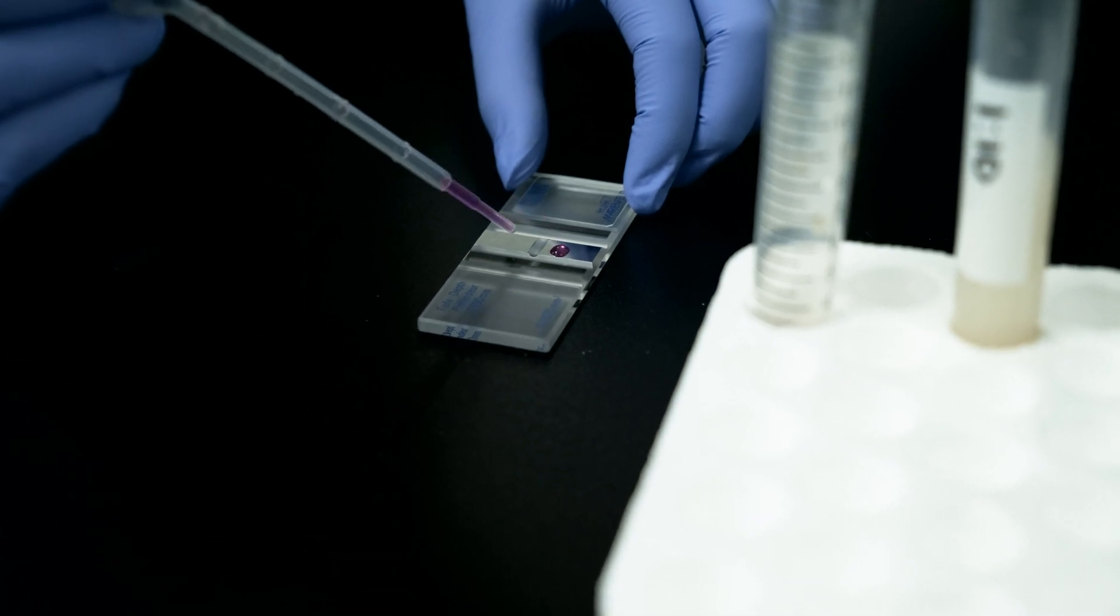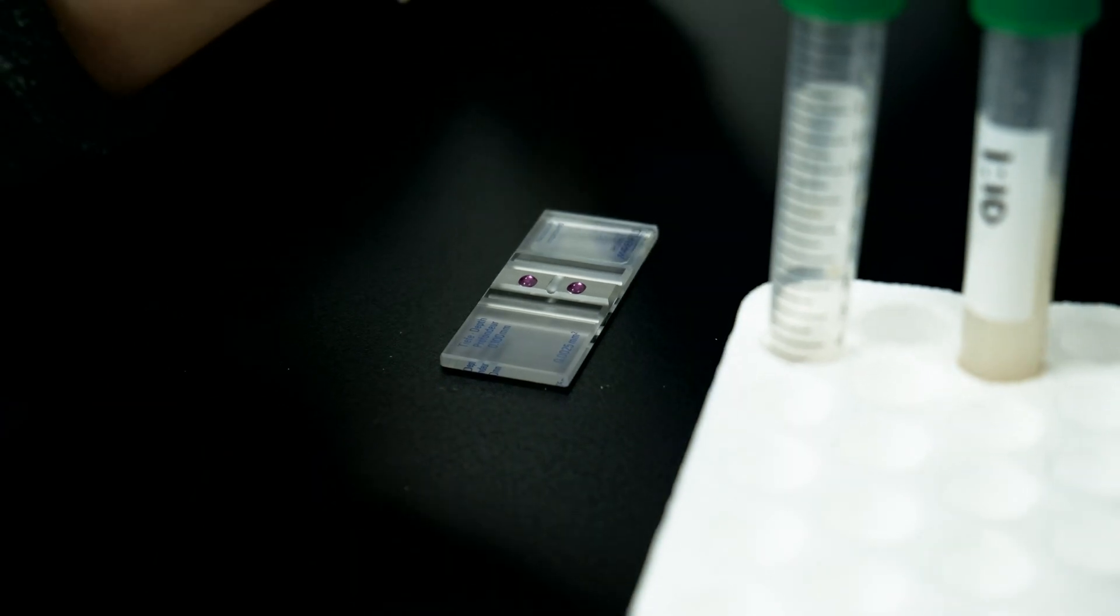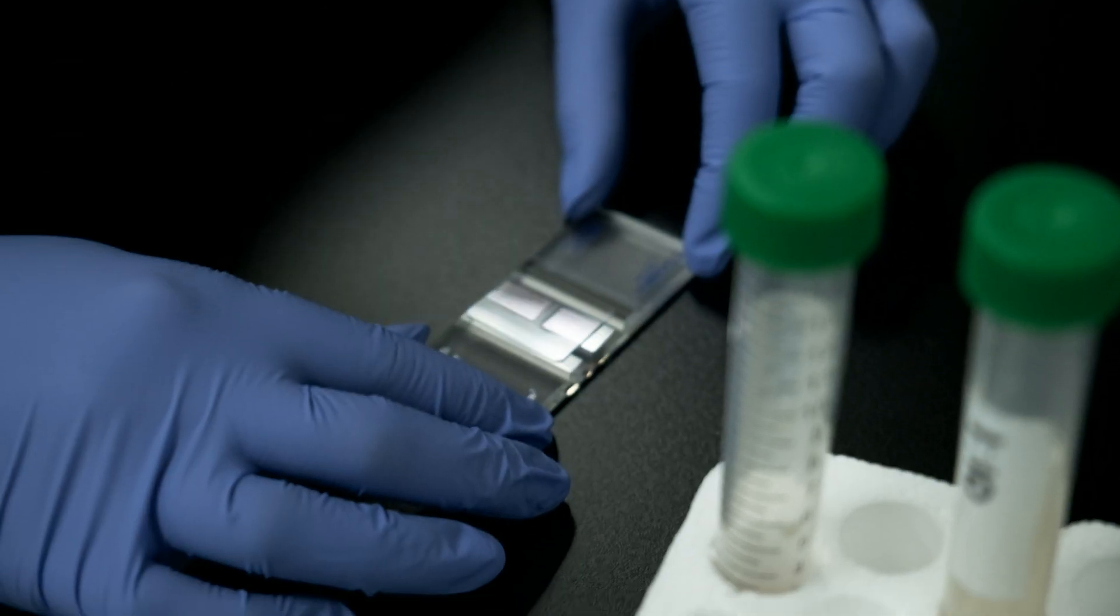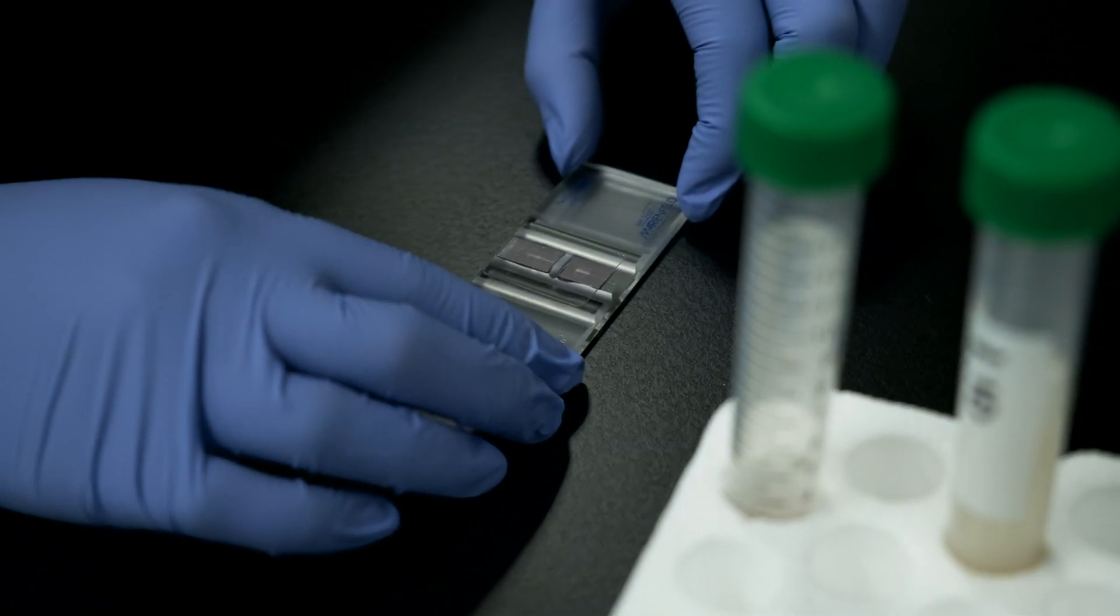Pipette approximately 10 microliters of your sample into the center of the counting area on your hemocytometer. Gently lay a cover slip over the sample without creating any air bubbles. If you're unable to measure 10 microliters, place a drop smaller than a pea.